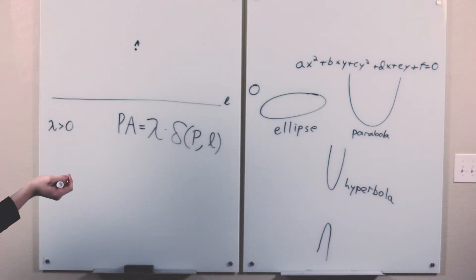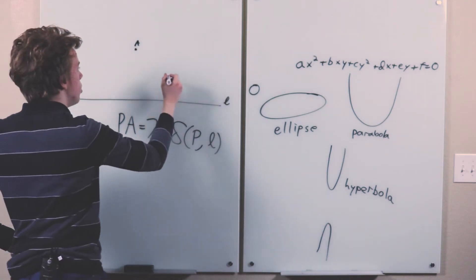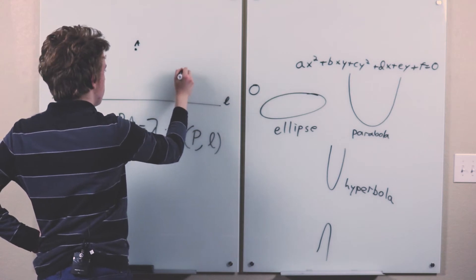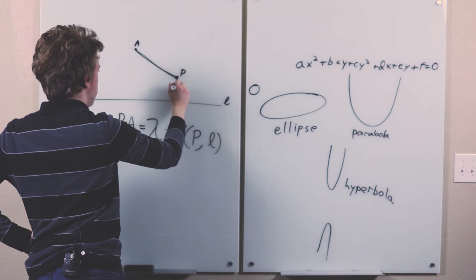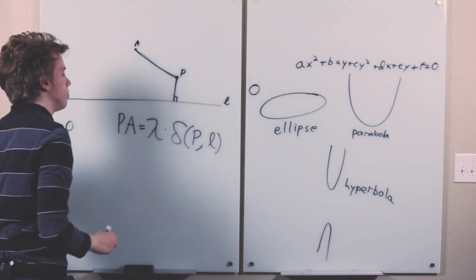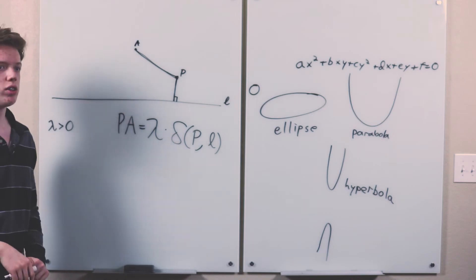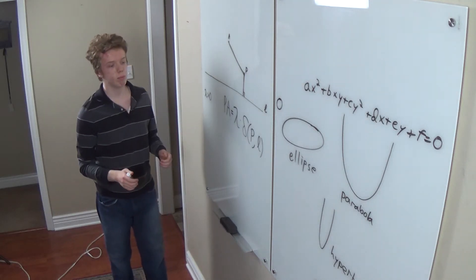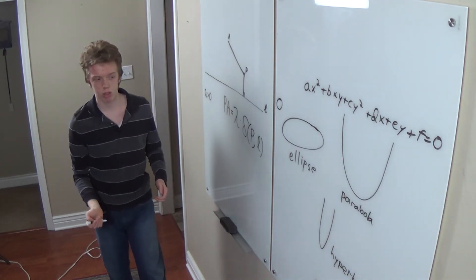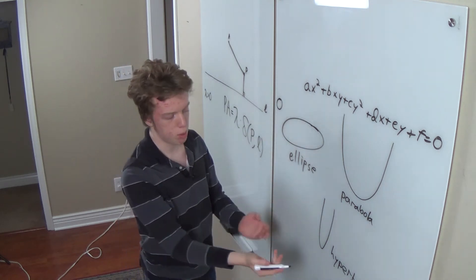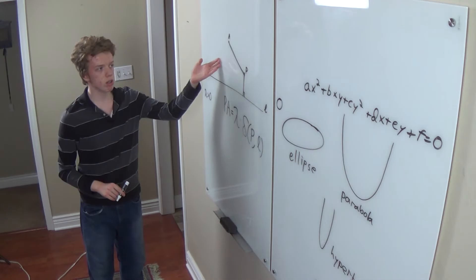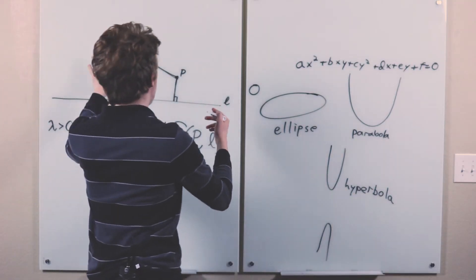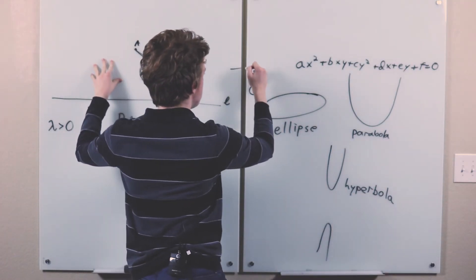So for example, if lambda is 2, then you might have this point on here because this is twice this distance. So it's not immediately clear why all these definitions say essentially the same thing, giving you this same family of ellipse, parabola, hyperbola. But let's see why this locus will give you a degree 2 equation.